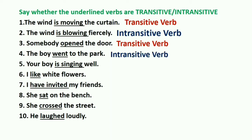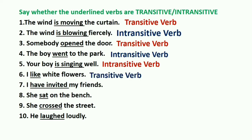Fifth one: 'The boy is singing well.' It tells us how the boy is singing, so this is also an intransitive verb. 'I like what?' I like white flowers — you are getting an answer to 'what,' so this is a transitive verb. 'I have invited whom?' I have invited my friends — you are getting an answer to 'whom.' Remember: 'what' or 'whom' equals transitive verb. So this is also a transitive verb.